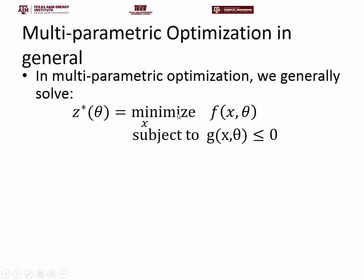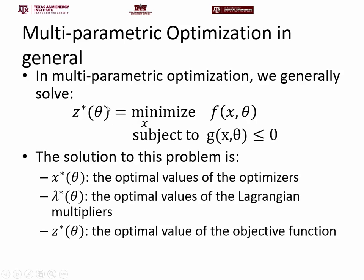In multi-parametric optimization, we minimize a function of both x and theta, subject to g of x and theta, but we only minimize over x. What that means is that your solution is going to be a function of theta. You can look at the minimization operator as a projection operator that projects from the x space onto a lower-dimensional space. In normal optimization you project down to numbers — zero-dimensional — whereas in multi-parametric programming you project from the x-plus-theta space to the theta space.